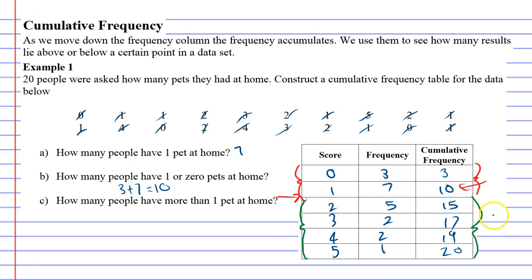Or you might notice that previously we had 10 and at the end we had 20. So at this point we've got 20 and previously 10. So we go 20 minus 10. There are 10 people who have more than one pet at home.